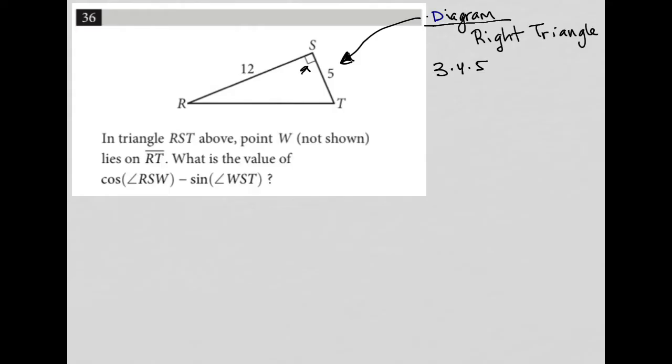In fact, this particular triangle is also another special right triangle that we should be aware of, which is called a 5, 12, 13, which means this length is 13.